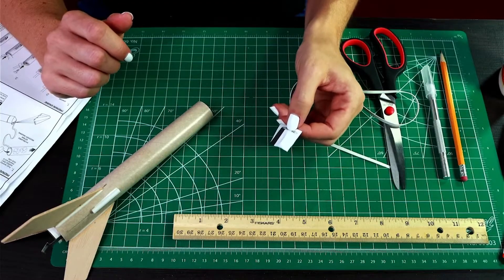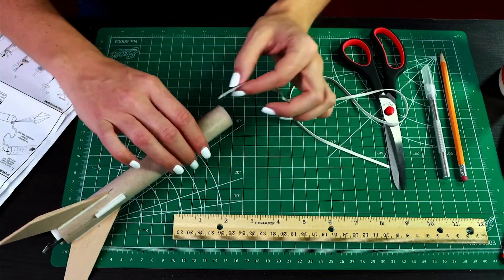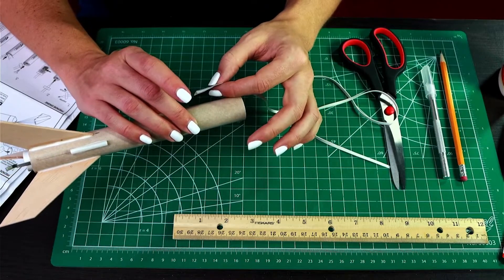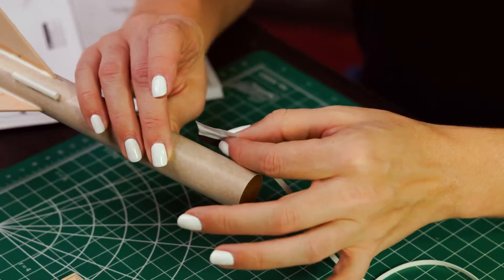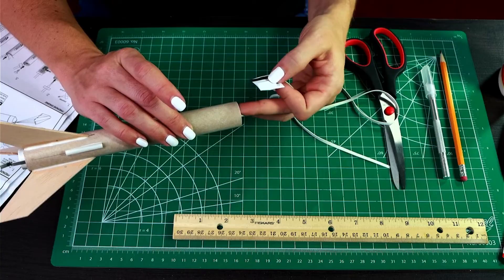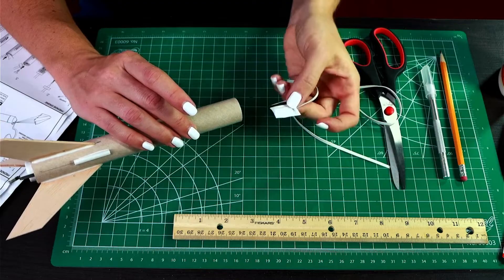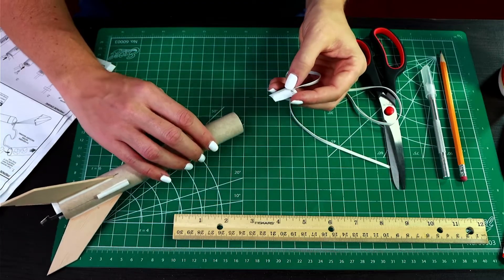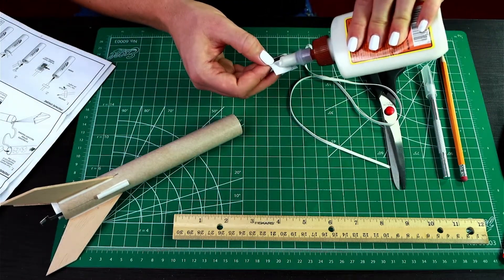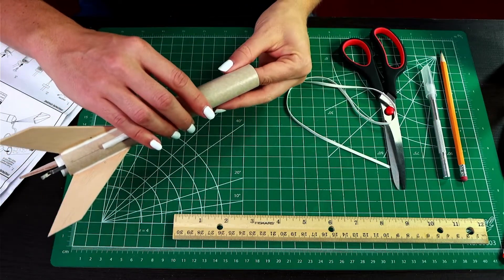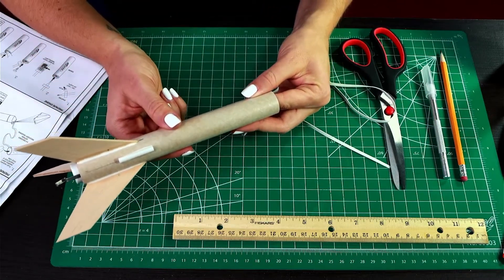Okay, now once this has set a little bit, we're going to put it inside the top end of the body tube, and we want it to go—the instructions say about an inch and a half in. It needs to be down far enough so that you can fit the nose cone inside without bumping into it. So we'll just put a little glue on this and then put it down in. And then you can just hold that till it sets.